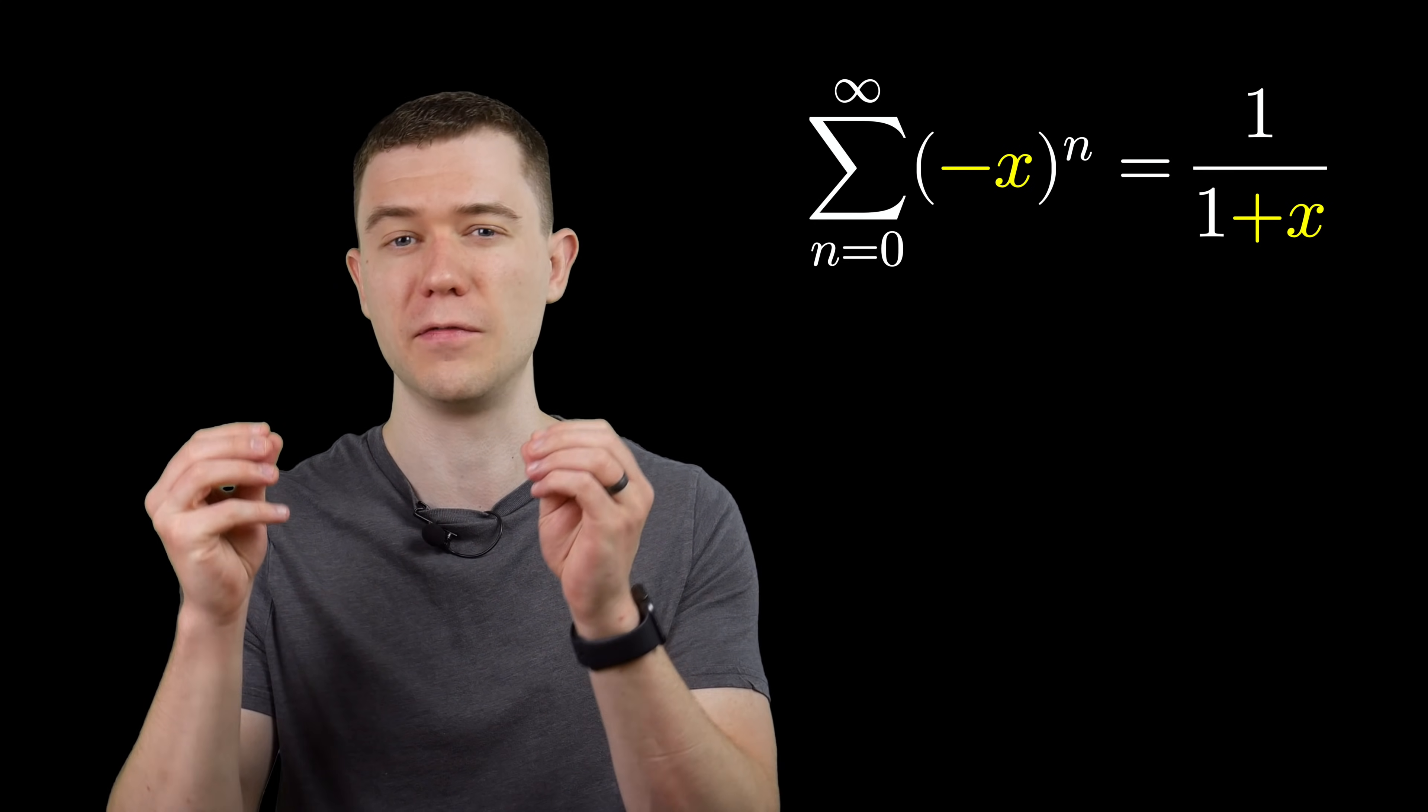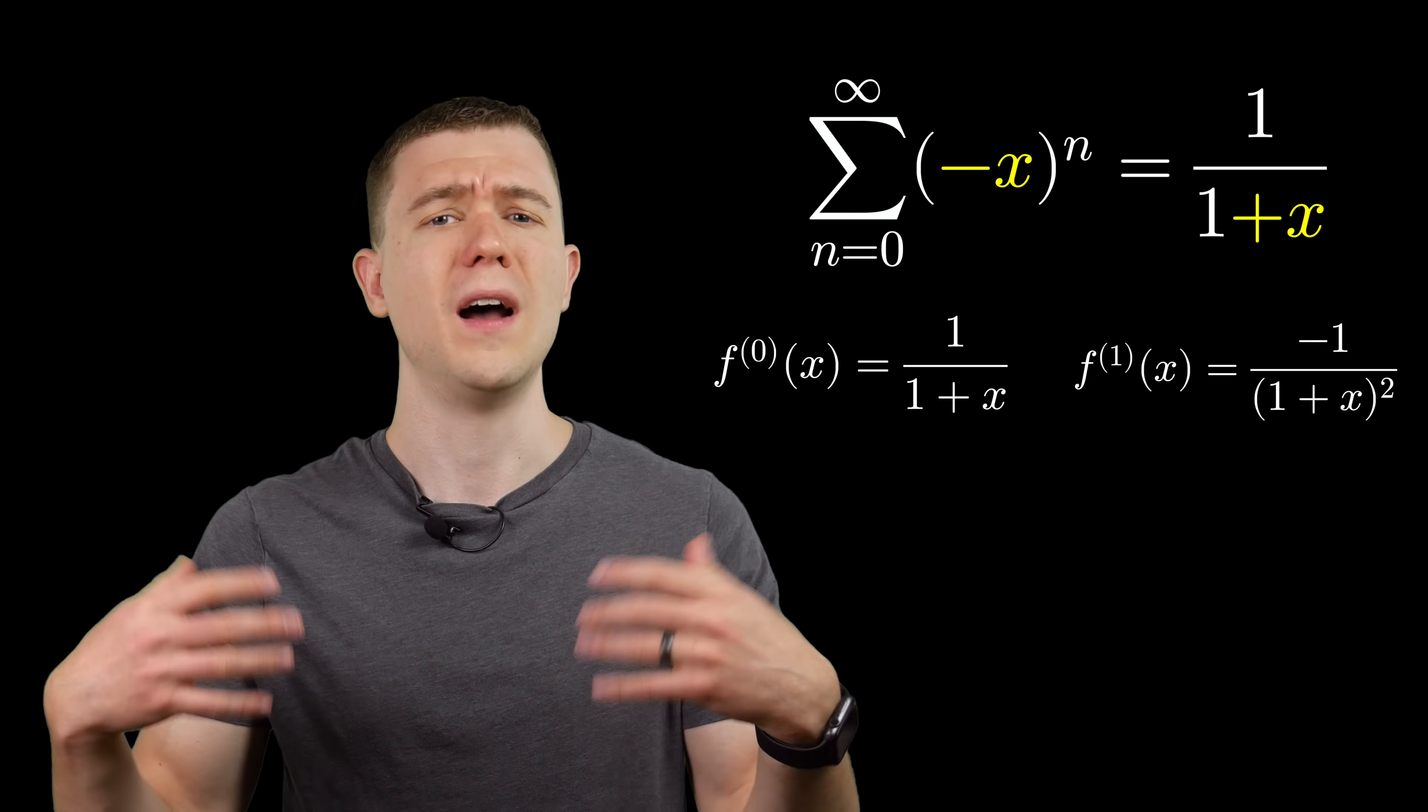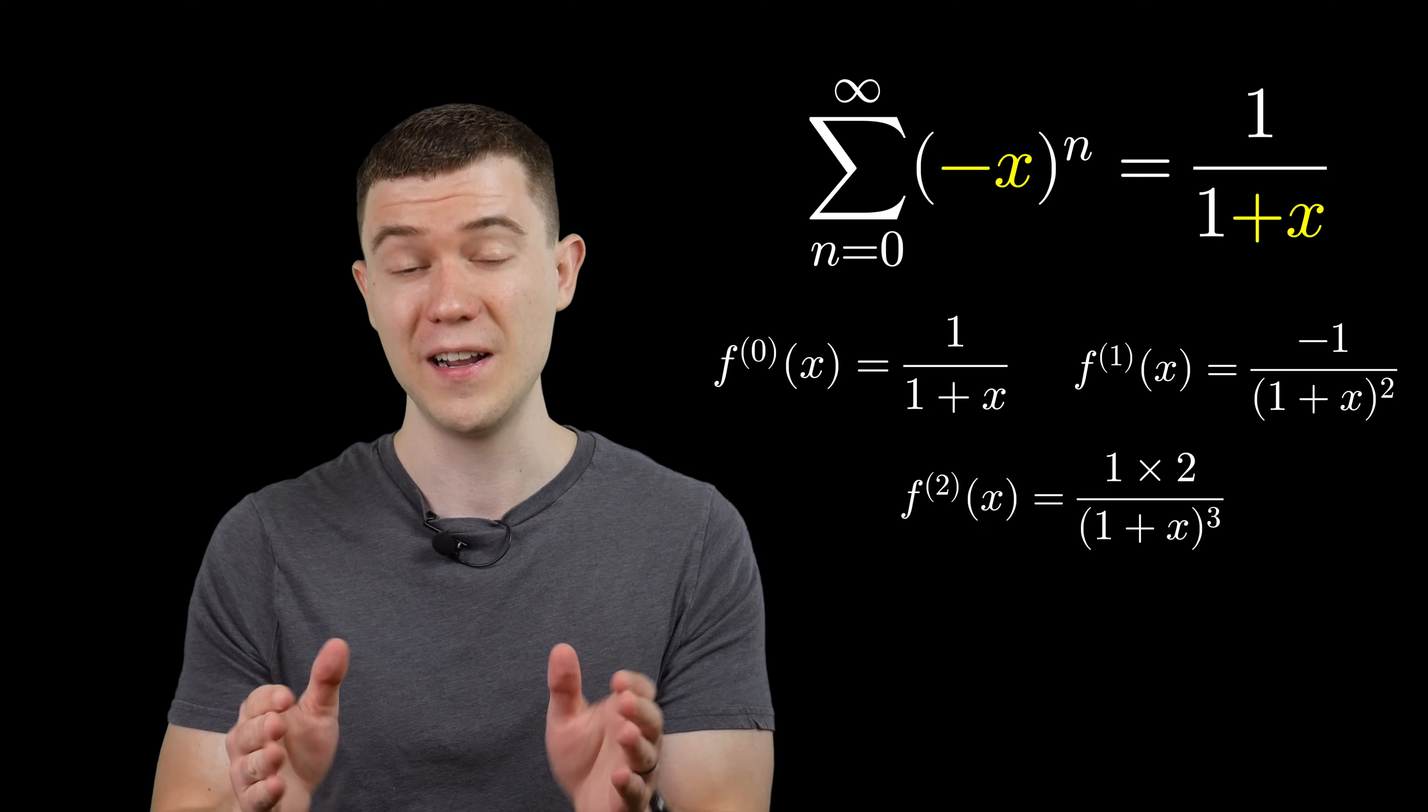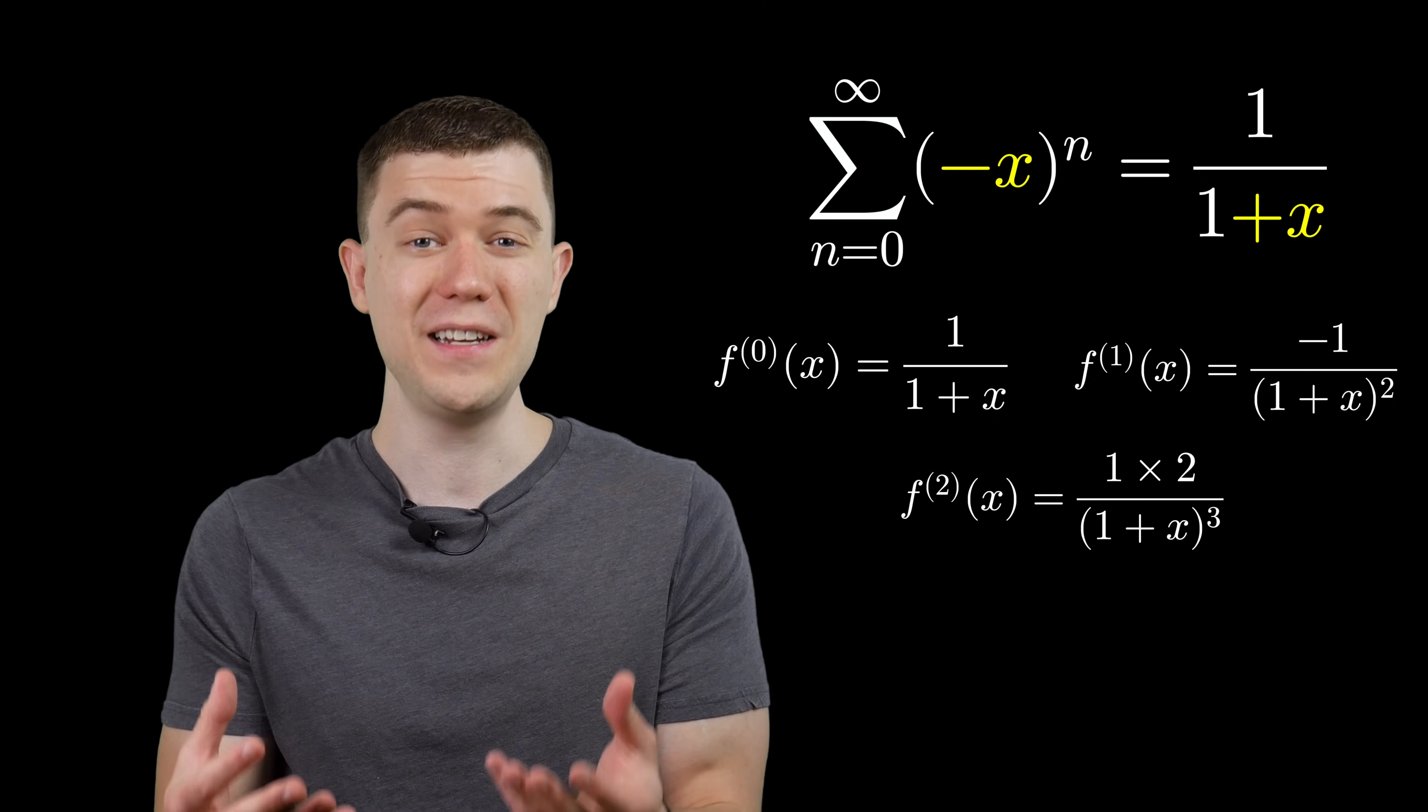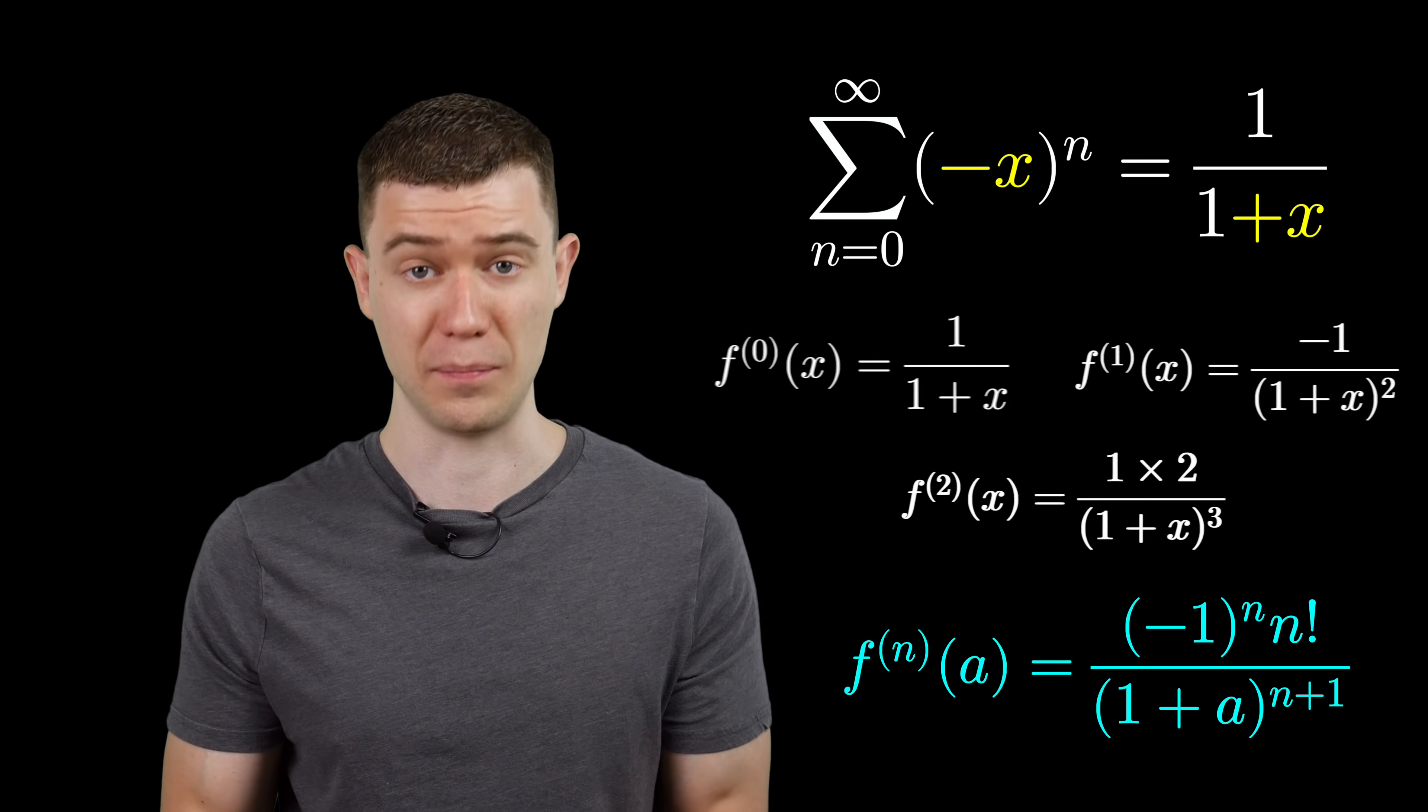We'll find the Taylor series for this centered at a. How do we do that? Well, we need to take derivatives of this thing until we see a pattern basically, and then substitute x equals a. The zeroth derivative is the function itself. You could take another derivative using the reciprocal rule, another derivative using the reciprocal rule. And if you don't combine anything, you start to see this alternating pattern as well as a factorial shows up. And it looks like after doing repeated derivatives, the pattern f nth derivative evaluated at a is n factorial over one plus a to the n plus one.